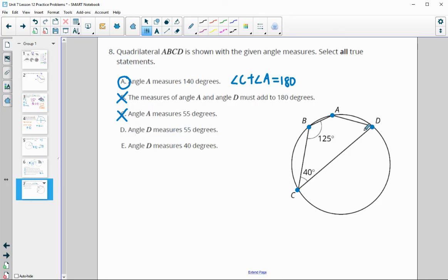Angle D measures 55. D is across from B, so angle D plus angle B needs to equal 180. 125 plus 55 does equal 180, so that's correct. So if we figured out D was 55, it certainly can't be 40. So just A and D in this one.